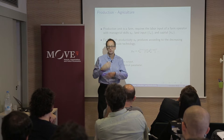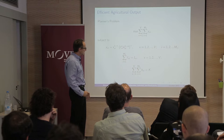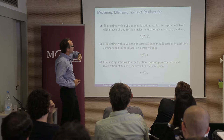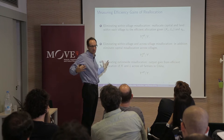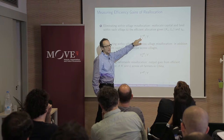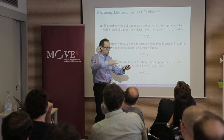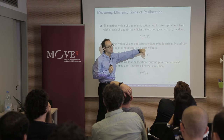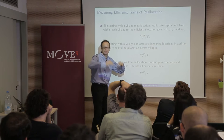In this type of framework, what matters is the operational scale — who owns the factors and how they're used. You can calculate what the aggregate output is in that economy, holding total capital and total land fixed, holding the distribution of farmers you see in that village, and ask how much output will go up if factors are allocated to their most productive use. You can do that across villages and nationwide.